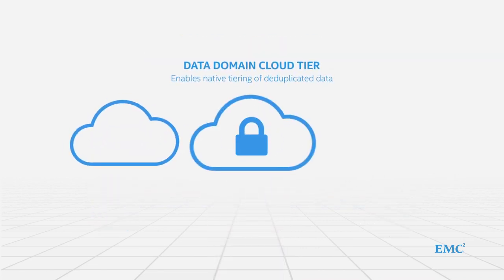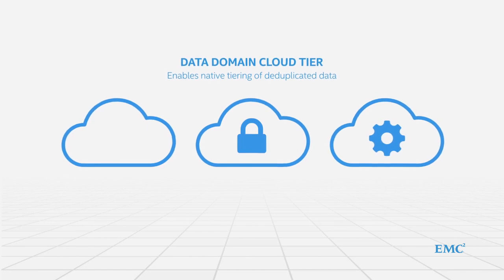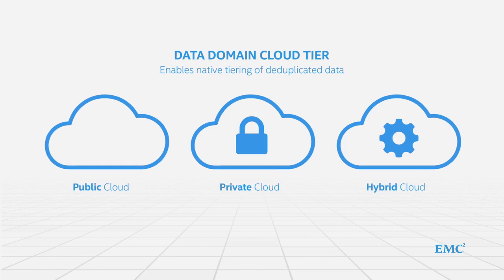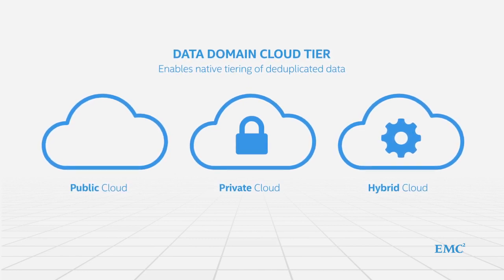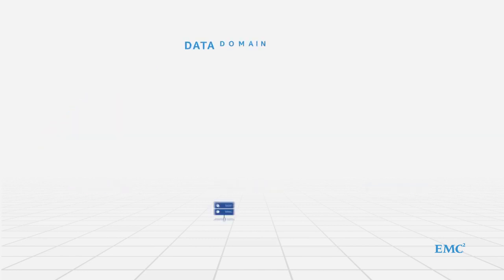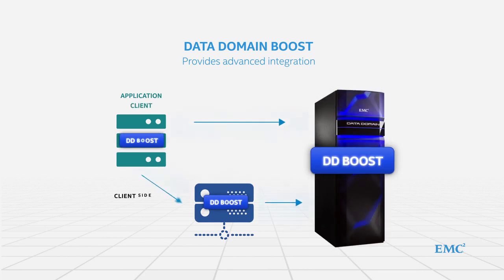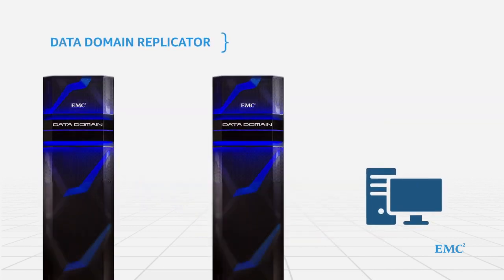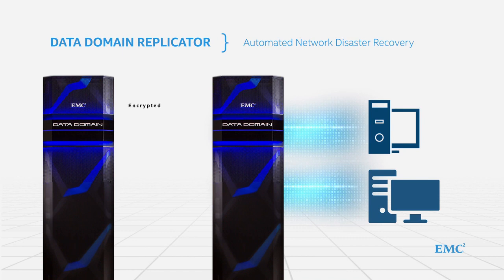Data Domain Cloud Tier enables native tiering of deduplicated data to the public, private, or hybrid cloud for simple, cost-effective, and secure long-term retention in the cloud. Data Domain Boost provides advanced integration between leading backup and enterprise applications and Data Domain by distributing parts of the deduplication process to the backup or application server, enabling up to 50% faster backups. Data Domain Replicator provides automated, network-efficient, and encrypted replication for disaster recovery.